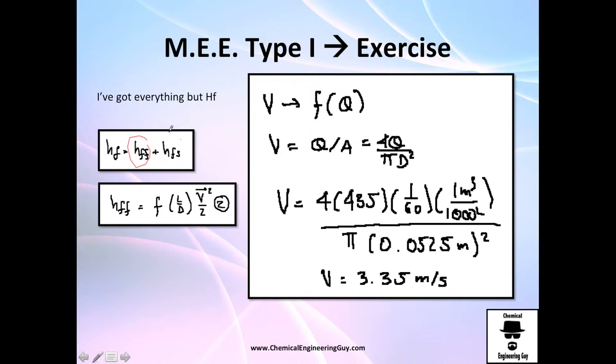Friction loss is that of the shape and that of the wall. That of the wall is the friction factor times the length of the pipe divided by the diameter times the velocity head. So I do it.